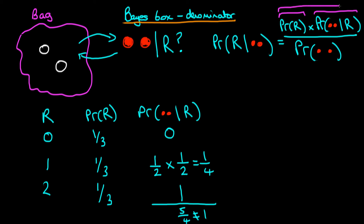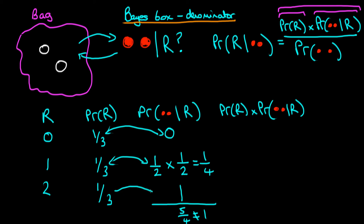The next term in the Bayes box is the entire numerator — the product of the prior times the likelihood. For R equal to zero: one third times zero gives zero. For R equal to one: one third times one quarter gives one over twelve. For R equal to two: one third times one gives one third, which we can rewrite as four twelfths.